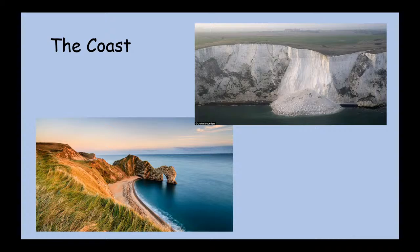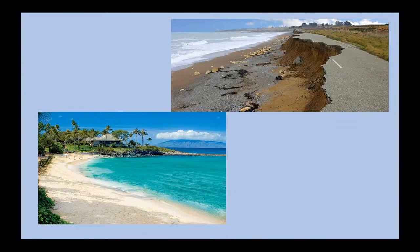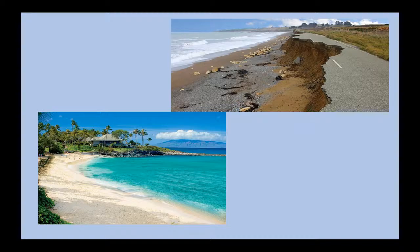We've got two pictures of the coast — both from the UK on the south coast. On the top right we've got the White Cliffs of Dover, and on the bottom left we've got an area called Durdle Door. We've also got two pictures not from the UK. The bottom left shows a tropical-style beach with palm trees — probably your idea of a seaside holiday. The top right is quite different: a road by the coast that's been worn away by the sea. The waves don't look very angry in the picture, but they can be very destructive and destroy large areas of land.